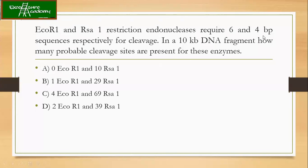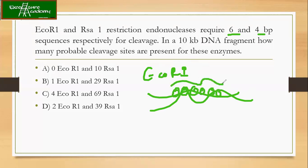So EcoR1 and Rsa1, these are the two restriction endonucleases. Already it is given in the question that they require six and four base sequences respectively for cleavage. What does it mean? It means that EcoR1 in a DNA sequence needs around six sequences to be recognized by this enzyme. Similarly, Rsa1 needs around four.